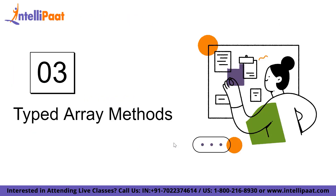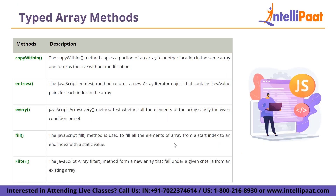Let's move to typed array methods. The first one is the copyWithin method, which copies a portion of an array to another location in the same array and returns the size without any modification. Next is the entries method, which returns a new array iterator object containing key-value pairs for each index in the array. Then comes every, which tests whether all elements of the array satisfy a given condition. Next is the fill method, which fills all elements of an array from a starting index to an end index with a static value.